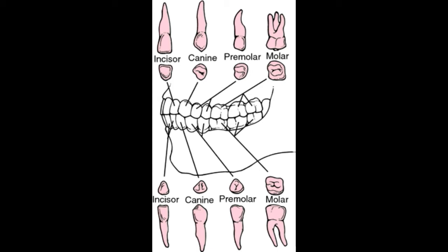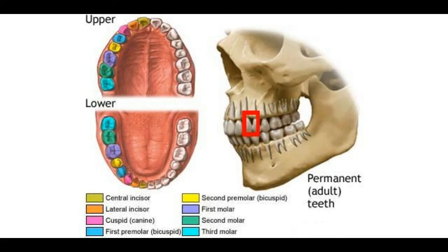The bicuspids typically grow in at 10 to 12 years of age. Dental notation systems describe teeth by noting their location in the mouth, either with a numerical designation or by name. The mouth can be divided into quadrants to specify location by describing upper or lower, left or right. The upper and lower designations are also referred to by the name of the jawbone, with the upper term being maxillary and the lower being mandibular.